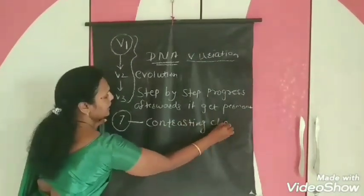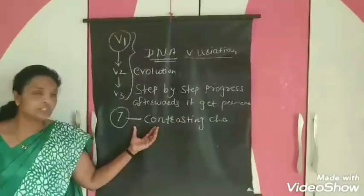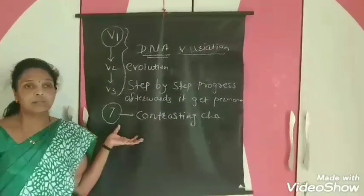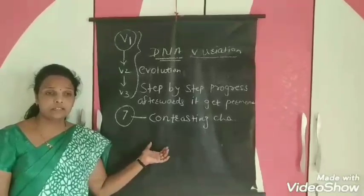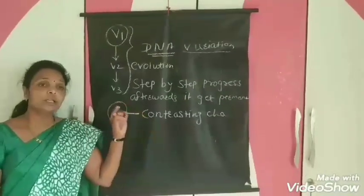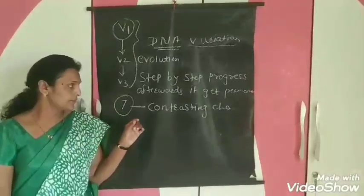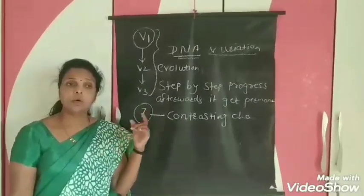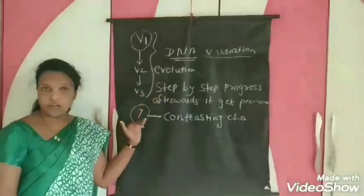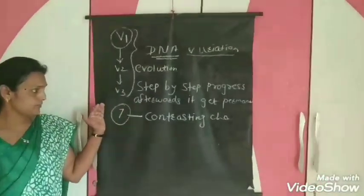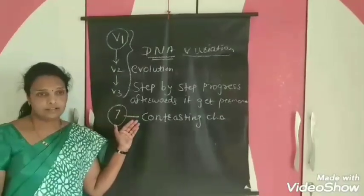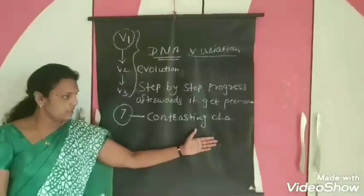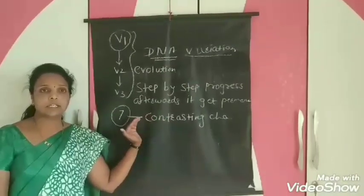The seven contrasting characters in Pisum sativum are: height of the plant (tall or dwarf), color of the seed (yellow or green), shape of the seed (round or wrinkled), color of the flower (red or white), and flower position (axile or terminal). These contrasting characters are observed in Pisum sativum.